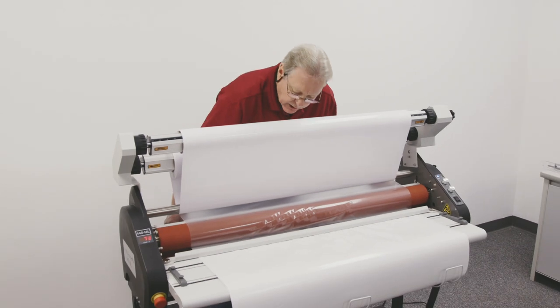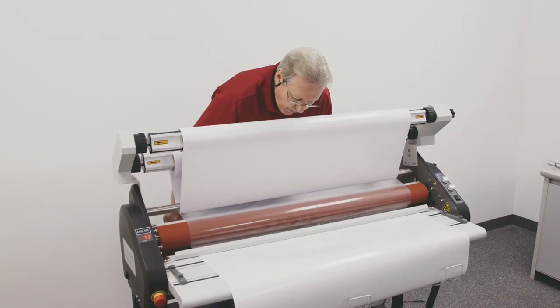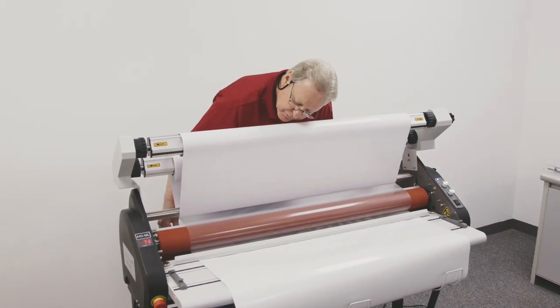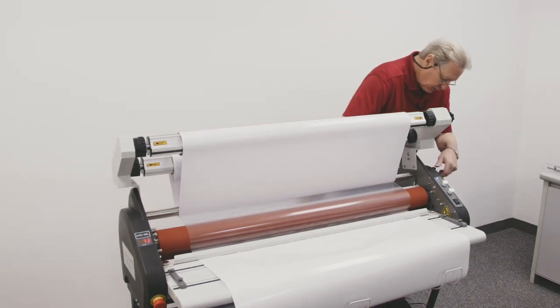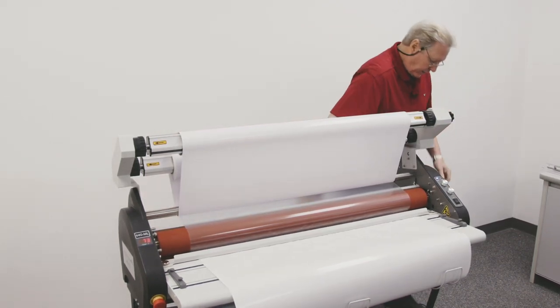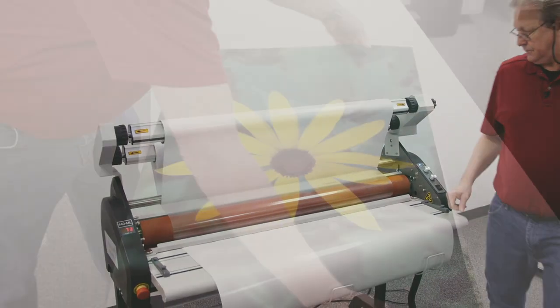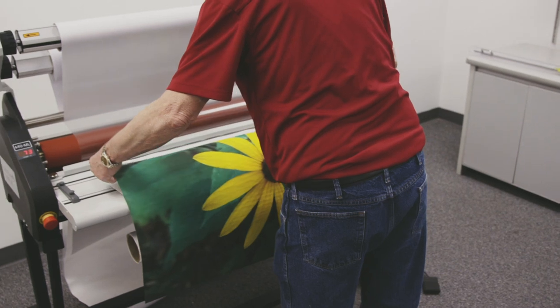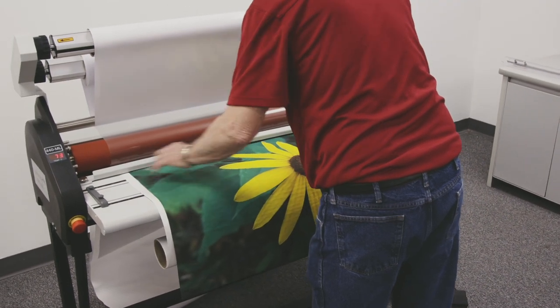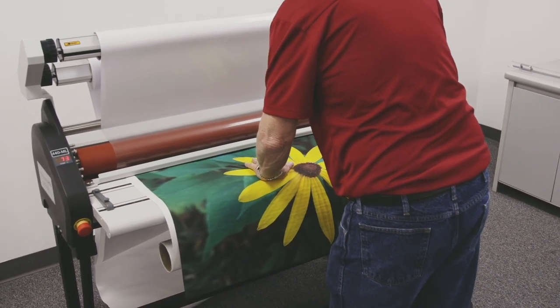Come around to the backside and just lightly pull until I see that film flatten out on that roller. Come over. Go ahead and close the roller. Bring my print over. Put it on the old release liner.